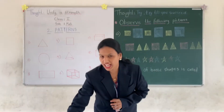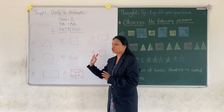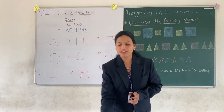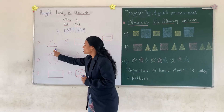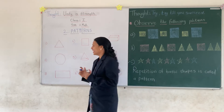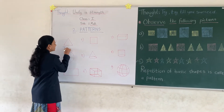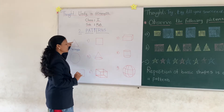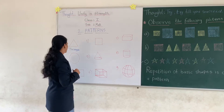Ok, so now I have drawn some shapes on the board. Can you identify them? Just tell me as soon as I ask — what shape is it? Very good. This is a triangle. What shape is it? Triangle. Very good.